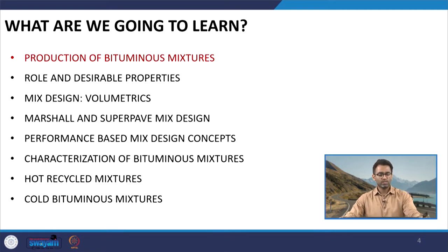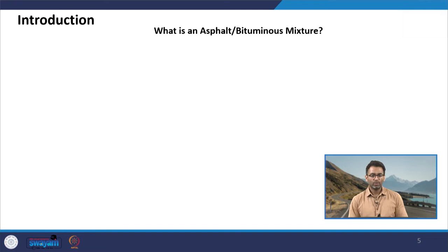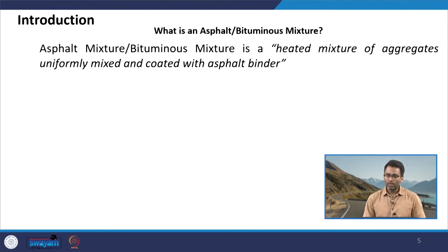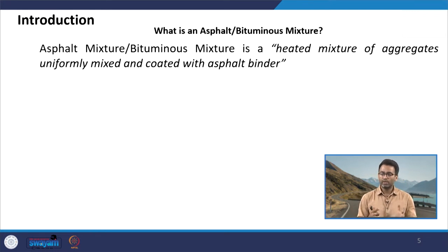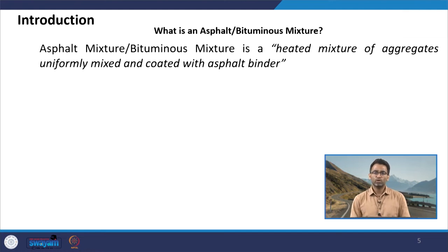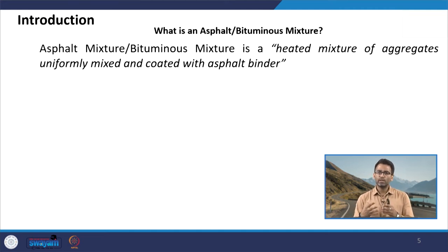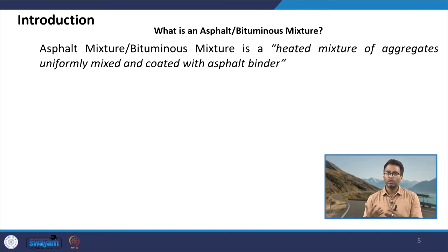Let us start by discussing the production of bituminous mixtures. First, let us understand what is an asphalt or bituminous mixture — both terms are used interchangeably. In simple terms, we can define a bituminous mixture as a heated mixture of aggregates uniformly mixed and coated with asphalt binder. The binder, which is bitumen, will be mixed with heated aggregates. This binder will also be in a heated state because bitumen is a viscoelastic material, and to make it fluid and workable we have to heat it to elevated temperatures.